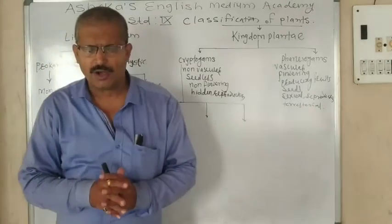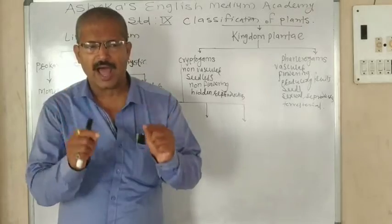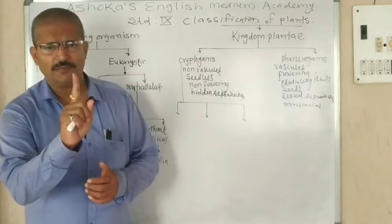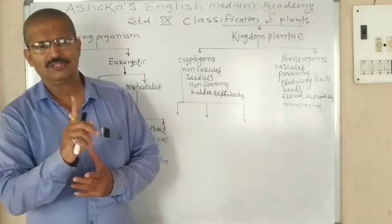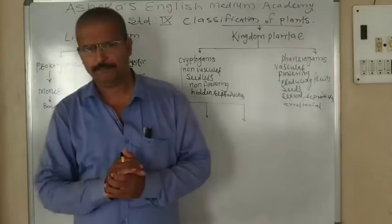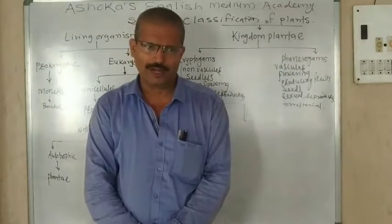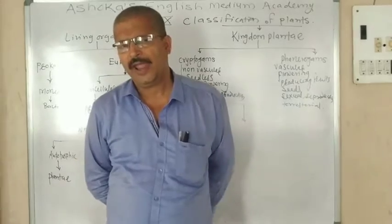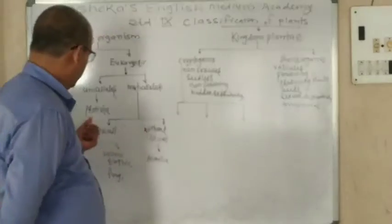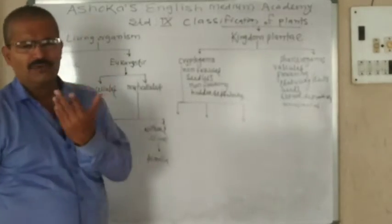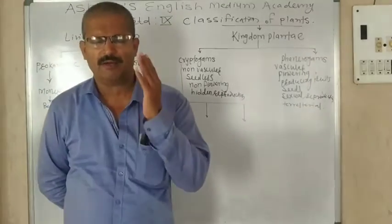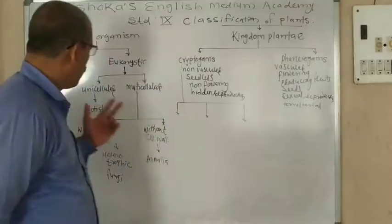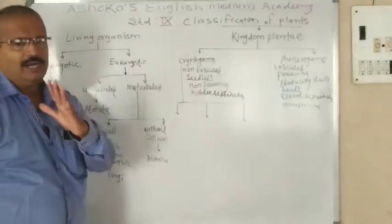Unicellular means those organisms made from a single cell. That is called unicellular. For example, Protista — including Amoeba, Paramecium, and Plasmodium — and in case of plants, Chlorella is a unicellular plant. These are examples of unicellular living organisms.